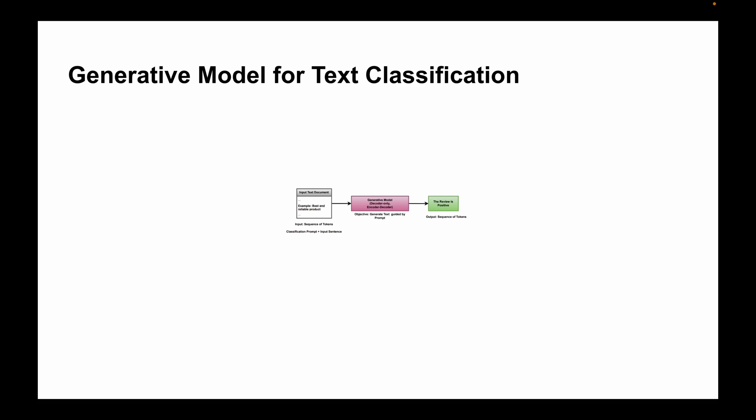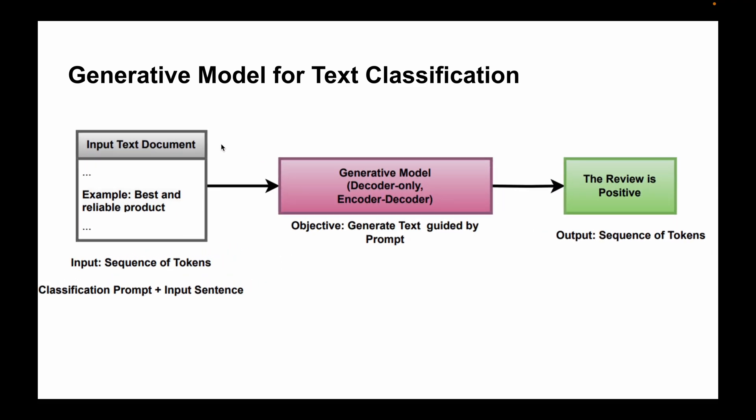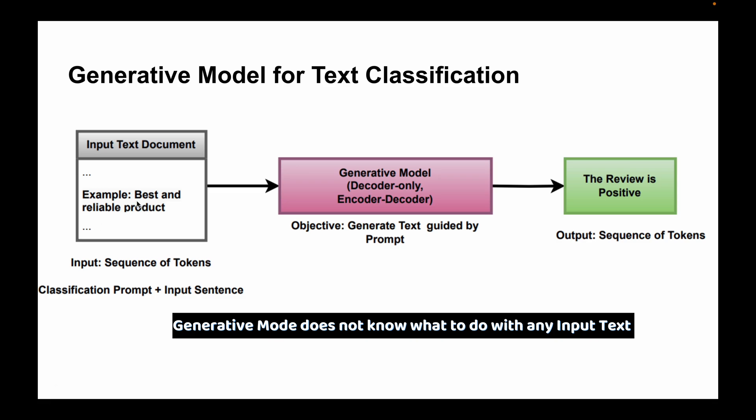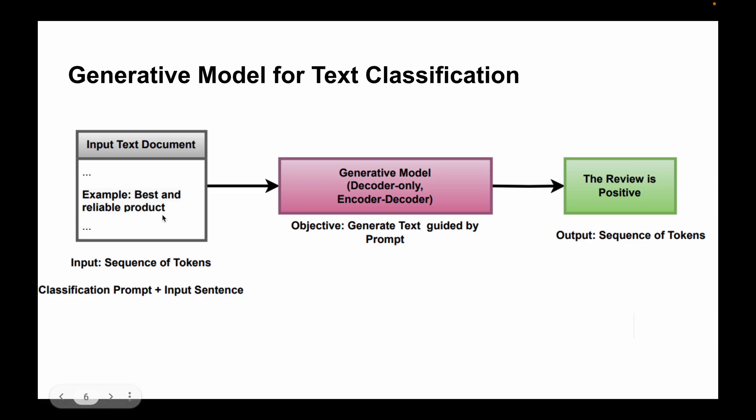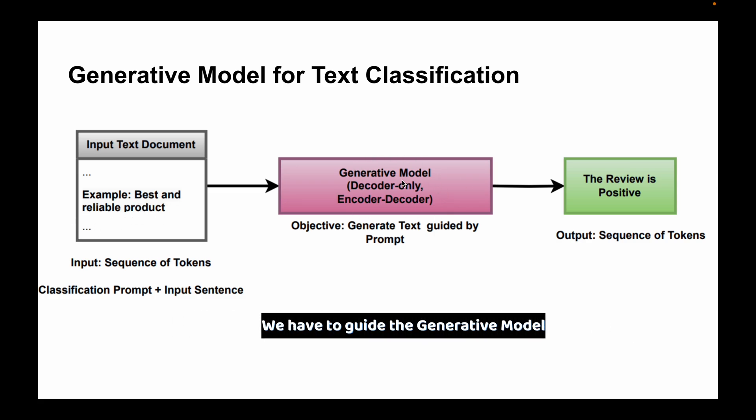Now that we've covered representation models for text classification, let's move to generative models. This is an overview of how we can use generative models, decoder-only models, or encoder-decoder models for text classification. We have input text, and the objective of the generative model is to generate text. But the generative model doesn't know what to do with the input text like 'best and reliable product.'